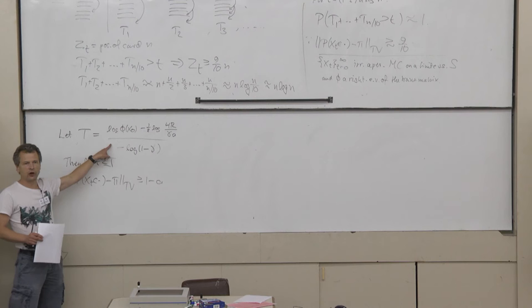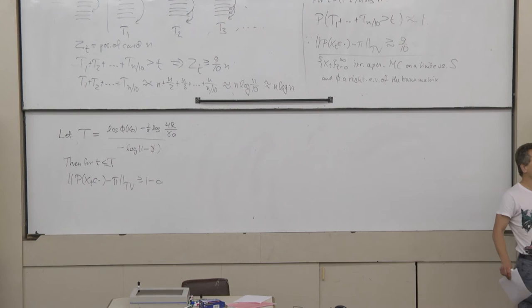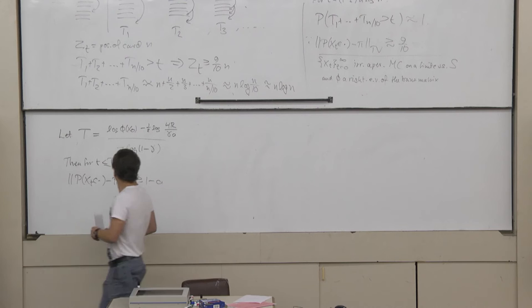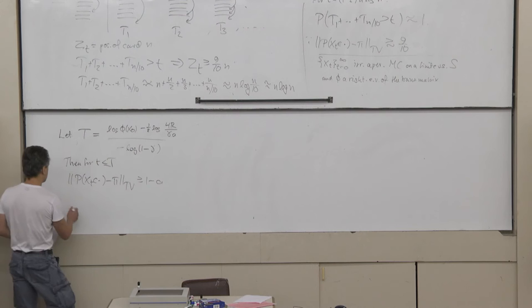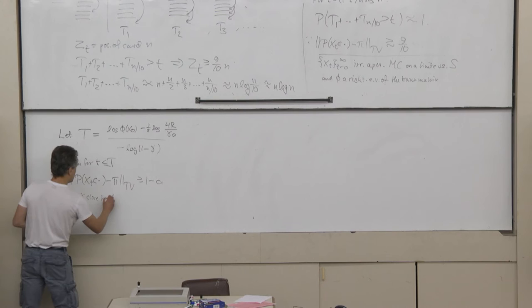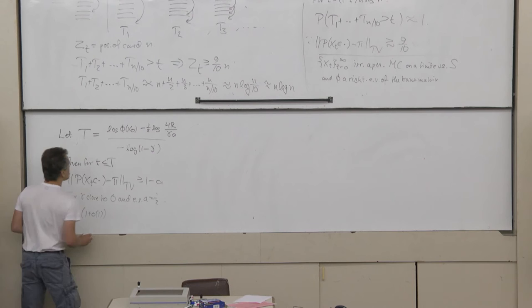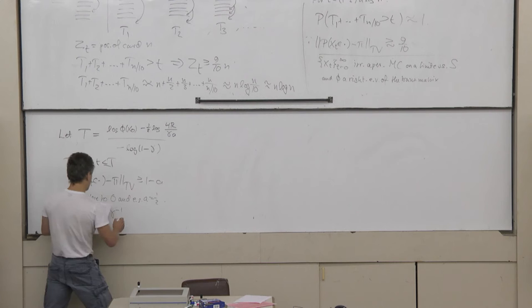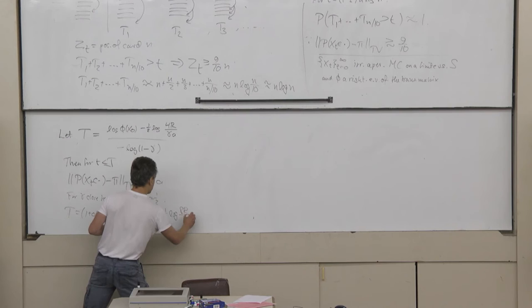This expression is maybe not so nice, but in most situations the eigenvalue will be very close to 1, so gamma will be very close to 0. For gamma close to 0 and taking a to be one half, we get that T is approximately (1 plus small order term) times (1/gamma) times log(phi(X_0)) minus one half times log(8R over gamma).